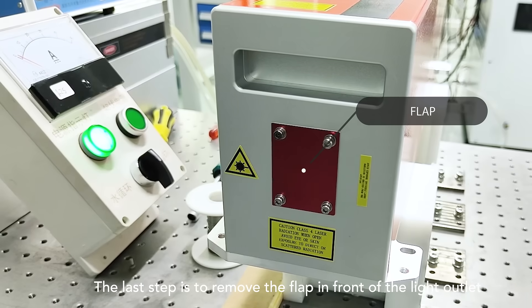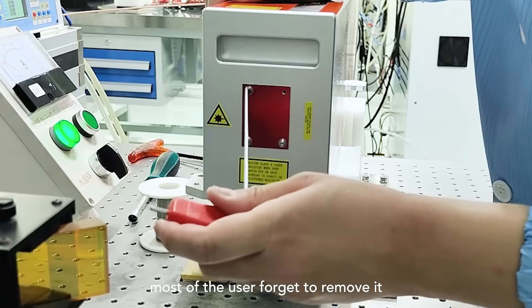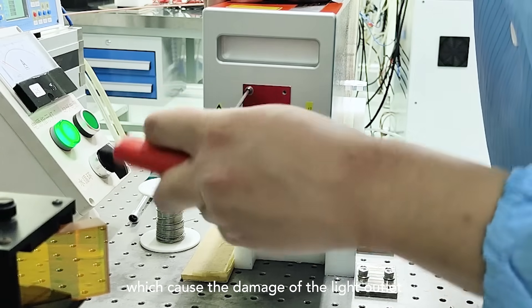The last step is to remove the flap in front of the light outlet. Most users forget to remove it, which causes damage to the light outlet.